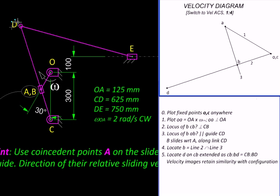From D, we can proceed to find the velocity image of E. So velocity of E relative to D will be perpendicular to DE. So that locus we can plot.